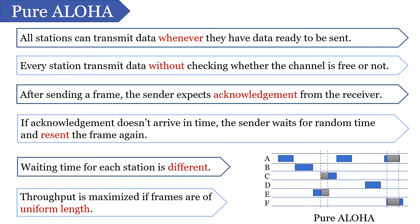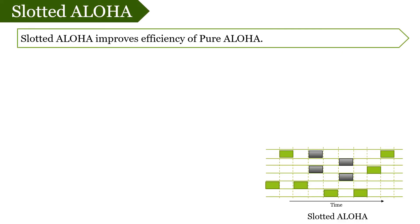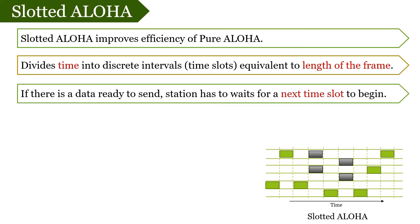The other Aloha protocol is slotted Aloha protocol. The more efficient version of pure Aloha protocol is nothing but slotted Aloha protocol. Here, the time is divided into discrete intervals or slots, where each interval is equal to the length of a frame. In slotted Aloha protocol, whenever a station has data ready to be sent, it doesn't send it randomly. Instead, it waits for the next time slot to begin.